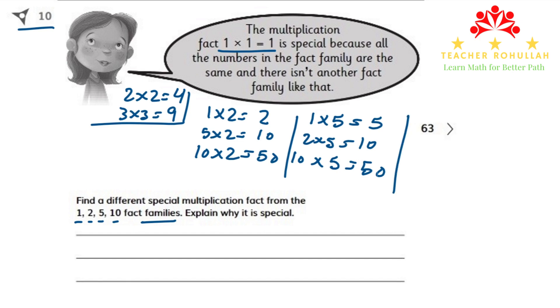Or if we multiply 1 by 10, we get 10. If we multiply 2 by 10, we get 20. And if we multiply 5 by 10, we get 50.